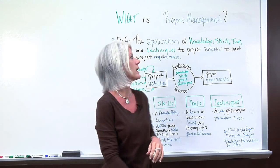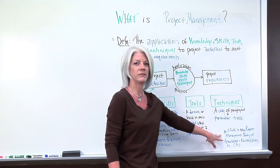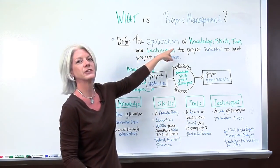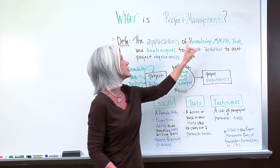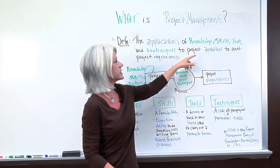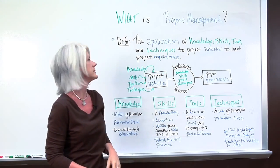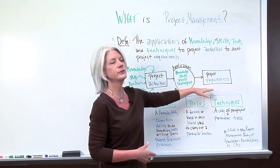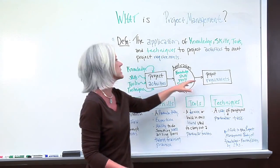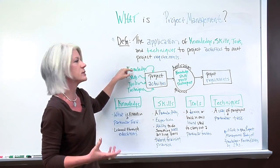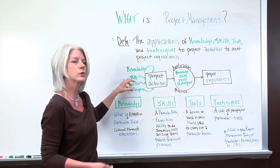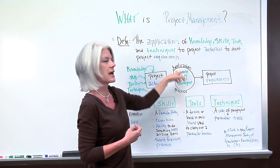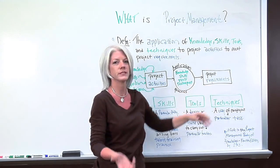The PMBOK Guide — A Guide to the Project Management Body of Knowledge, fourth edition by PMI — says project management is the application of knowledge, skills, tools, and techniques to the project activities to meet project requirements. So if we look at this graphically, we have project activities going on and we're producing the project requirements — the scope, the deliverables. We're inputting our knowledge, skills, different tools, and different techniques, and those are applied against the project activities in some kind of application process to produce these requirements.